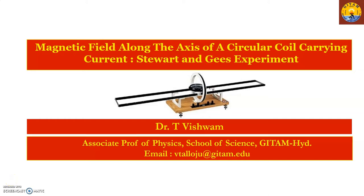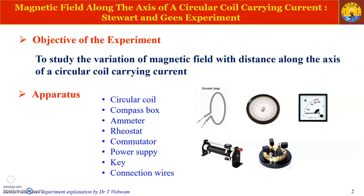Dear students, in this video I am explaining about the study of magnetic field along the axis of a circular coil carrying a current in the presence of earth's magnetic field. This experiment is also called the Stewart and Gee experiment. The main objective is to study how the magnetic field of the circular coil varies with respect to distance.